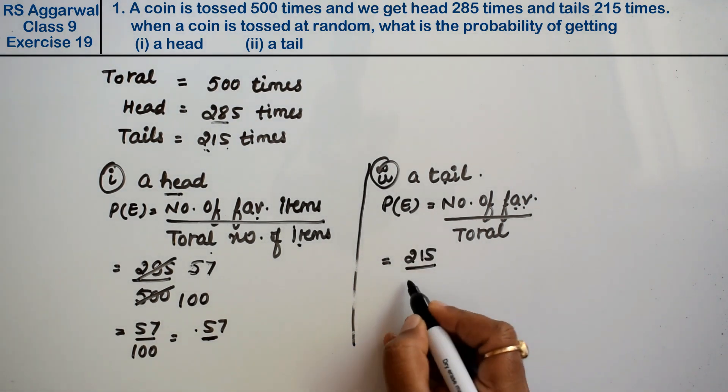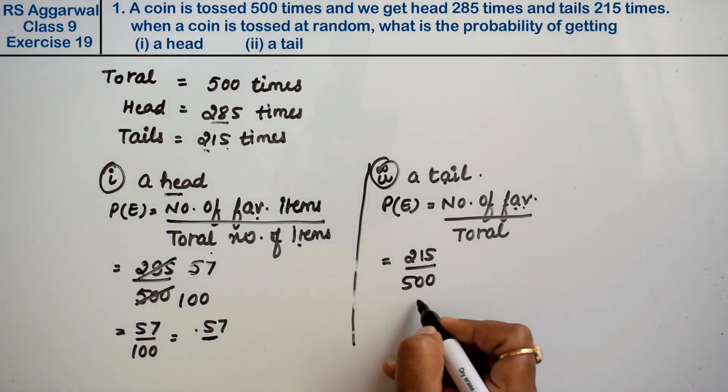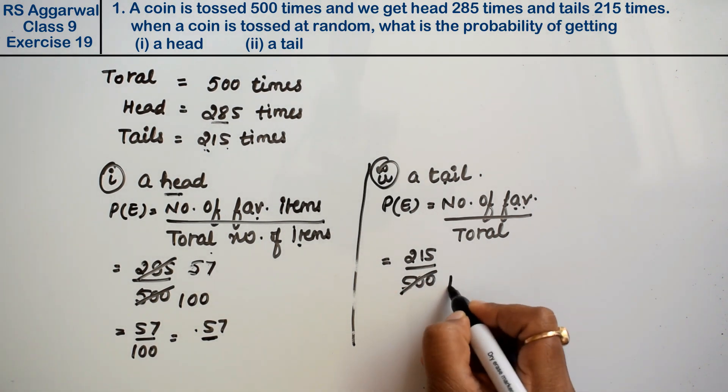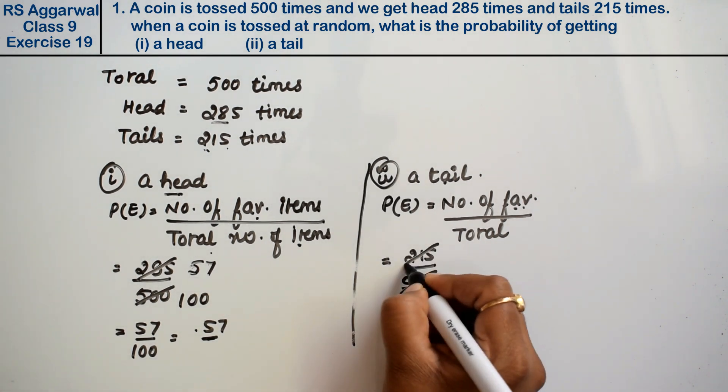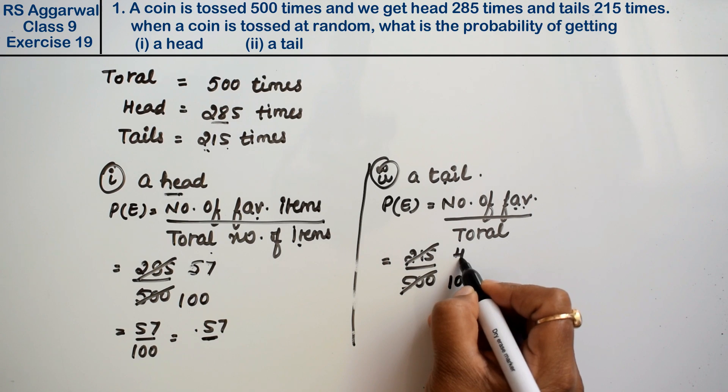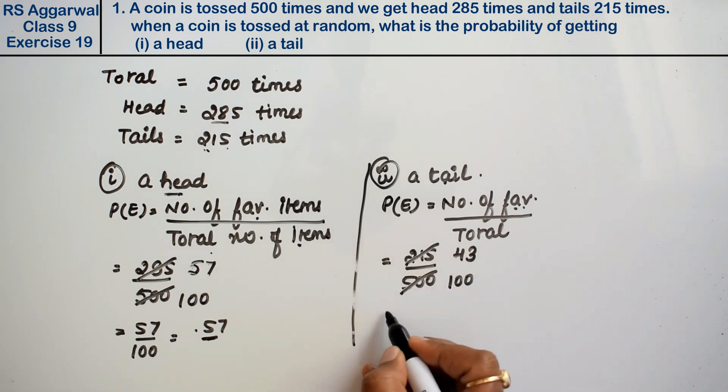Tail came 215 times out of 500. So reduced by 5: 215 becomes 43 and 500 becomes 100. So it's 43 by 100, which equals 0.43. That is the answer.